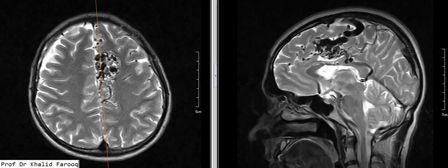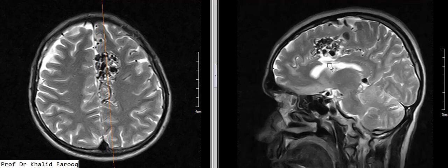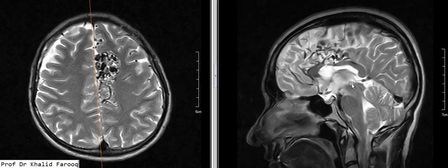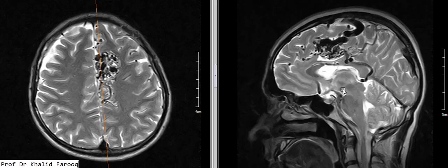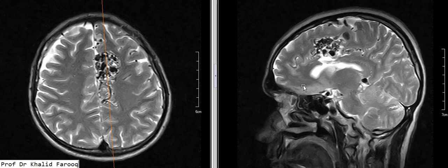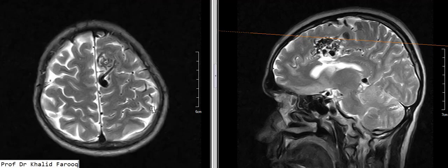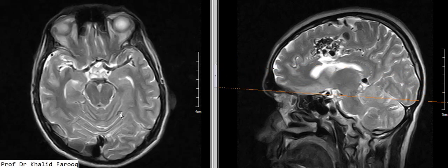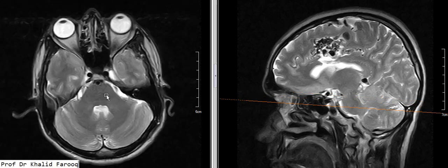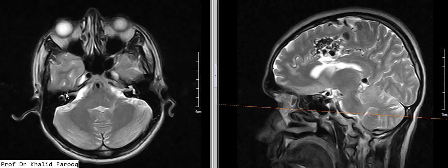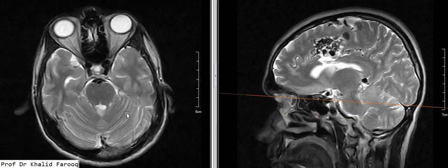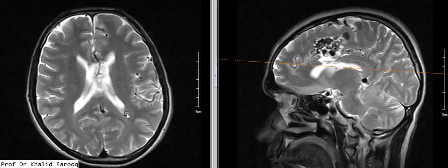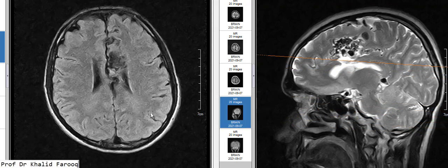We have seen there is thinning of the posterior portion of the body of the corpus callosum because of ischemic changes in this region. The remaining brain parenchyma is unremarkable. We can see the ventricular system, brain stem, middle cerebellar peduncle, both cerebellar hemispheres, and CP angles are unremarkable.